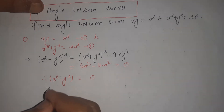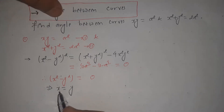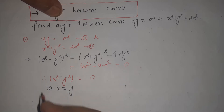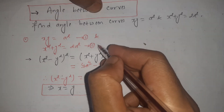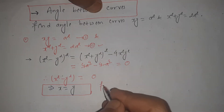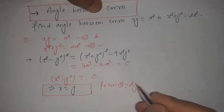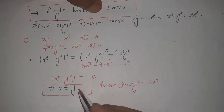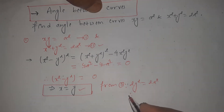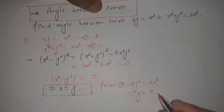From this relation, we get that x = y. Let's substitute this result into equation 2. Substituting x = y gives y² + y² = 2a², so 2y² = 2a², therefore y² = a², giving y = ±a. Since x = y, we also get x = ±a.